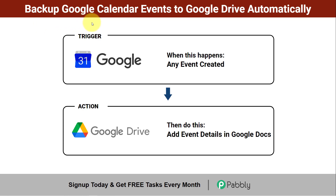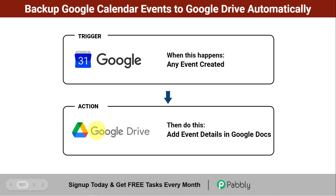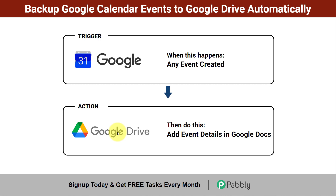In this video I will show you how you can create a backup of Google Calendar events to Google Drive automatically. The idea is that any event created in Google Calendar will automatically generate a file in Google Drive with all the event details added automatically, without doing anything manually. Simply set an automation between these applications and every time an event is created, the details get added inside a Google Docs file automatically.